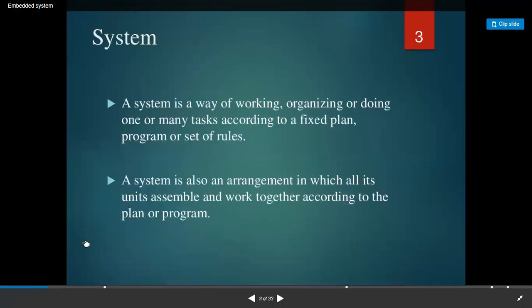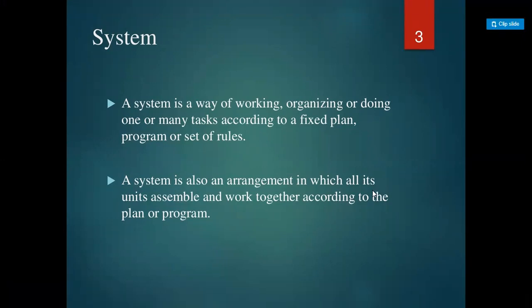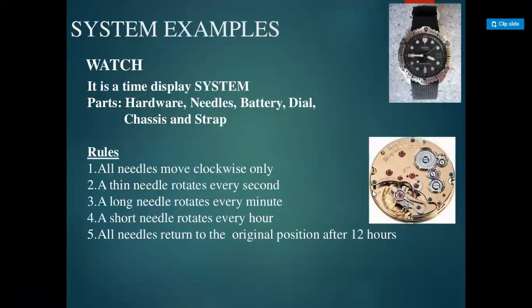First of all, what do we mean by system? A system is a set of ideas or rules for organizing something, or a particular way of doing something. A group of things or parts that work together is also called a system — basically a group of interacting and interrelated entities, working or doing tasks according to a fixed plan, program, or set of rules. A system is an arrangement in which all its units assemble and work together according to the plan or program.